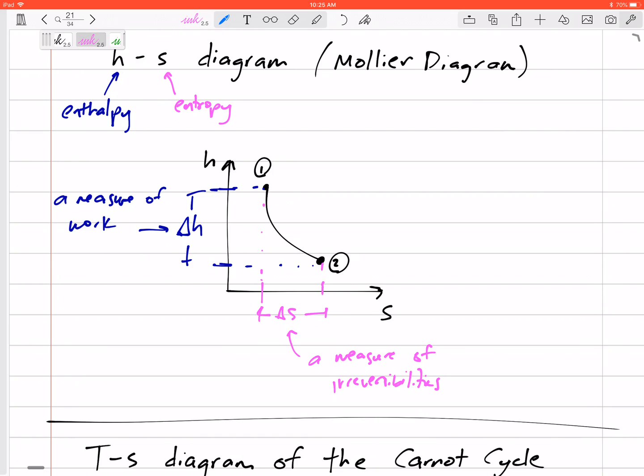Our delta S is a measure of irreversibilities. So this diagram kind of shows, and you can compare different paths. Which paths have more work? Which paths have less work? Which paths are more irreversible? Or which ones are more reversible? Which ones are closer to the Carnot, the theoretical limit?